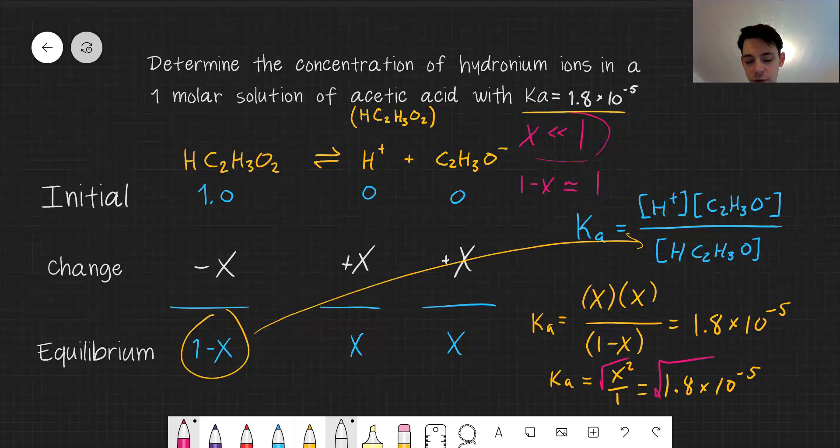Square root of 1.8 times 10 to the minus 5. It comes out to be 0.00424.